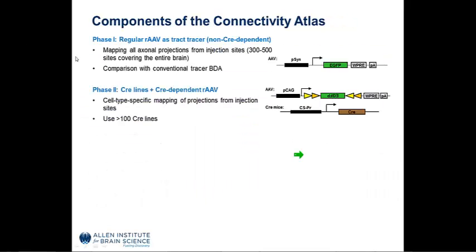The first phase of this project imaged projections primarily in wild-type mice, where any cell infected with the AAV virus began to express green fluorescent protein. We did a comparison of this method with the conventional tracer VDA, which is available online. In the second phase, we wanted to understand cell-type specific mapping of projections. We used CRE-dependent lines and CRE-dependent recombinant adeno-associated virus to look at specific contributions of different cell lines to projections into different areas of the brain.